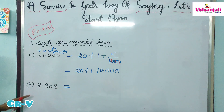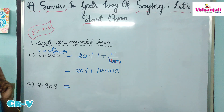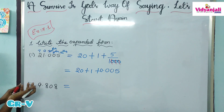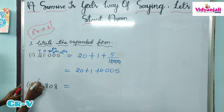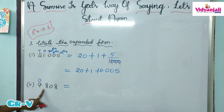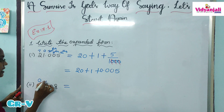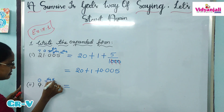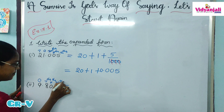Now the second question. Before writing the expanded form, please specify the place values. Before the point is the whole part or integral part, with place values 1's, 10's, 100's. After the point, the place values are 10ths, 100ths, 1000ths.